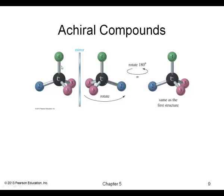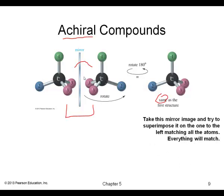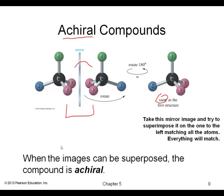For achiral compounds, note that if you have two or more of the same groups on the carbon, then its mirror image will be the same. If you rotate it, you find this molecule is the same as the original. So always remember: achiral compounds produce superimposable mirror images. When the images can be superimposed, the compound is achiral.